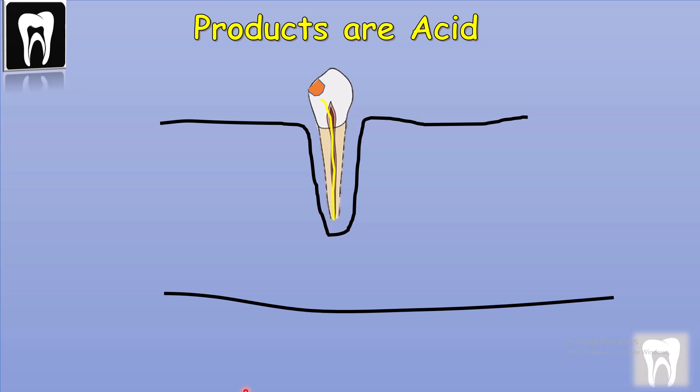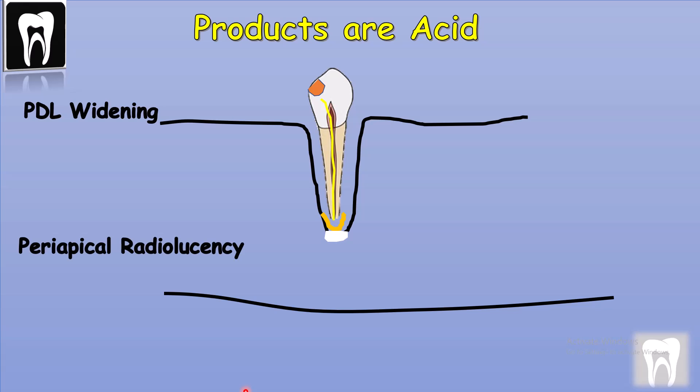So what we have is a periapical radiolucency with a periodontal widening and loss of the periapical lamina dura.